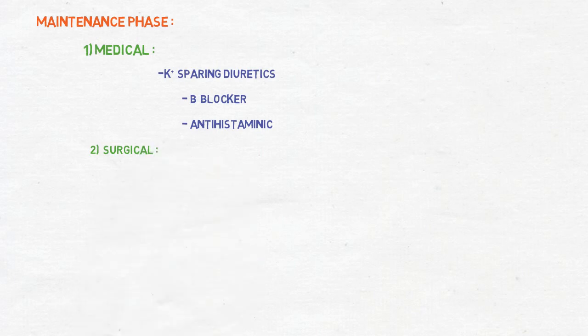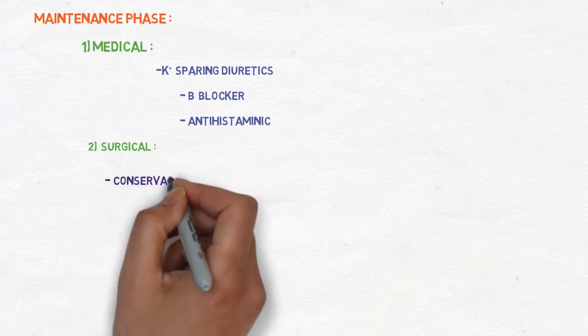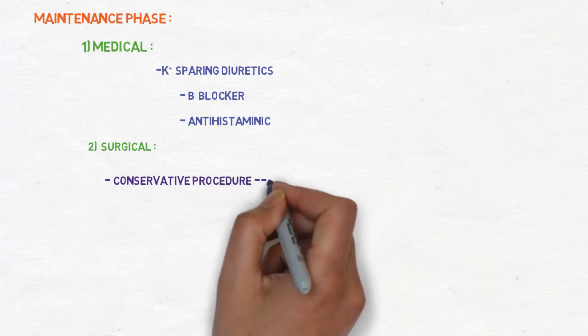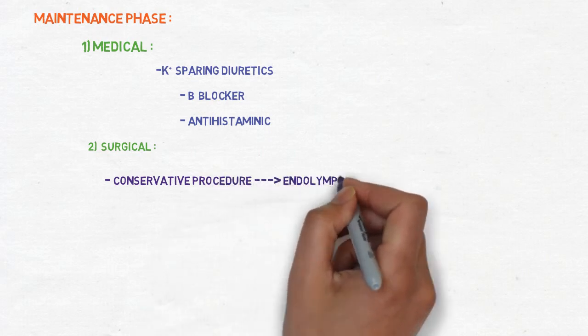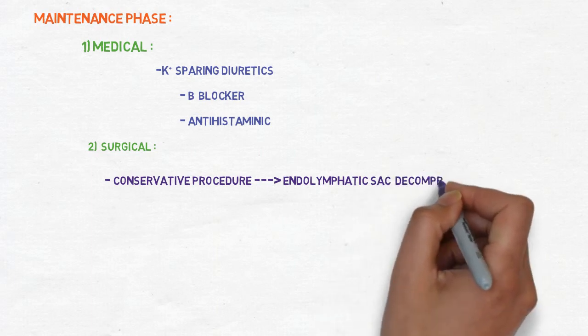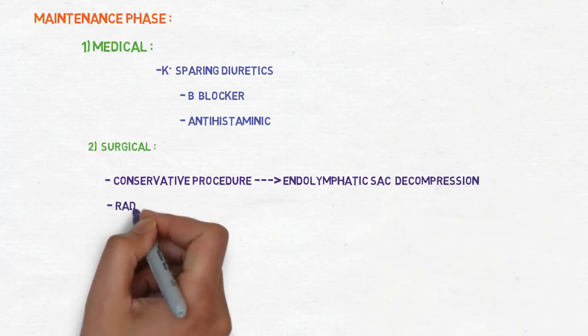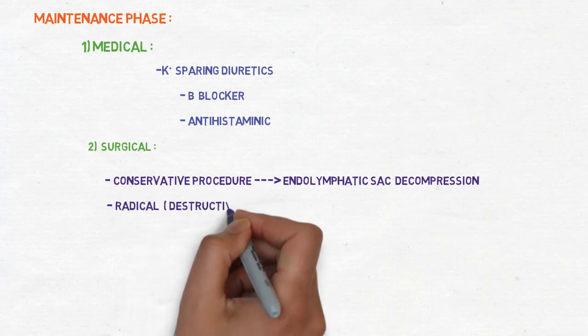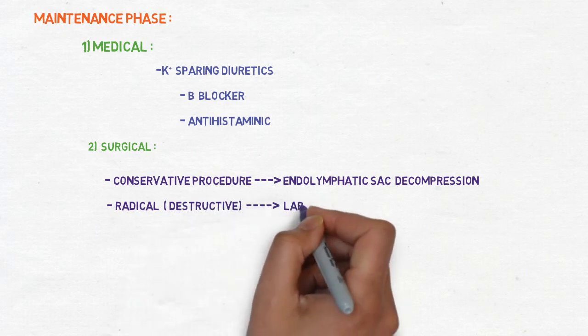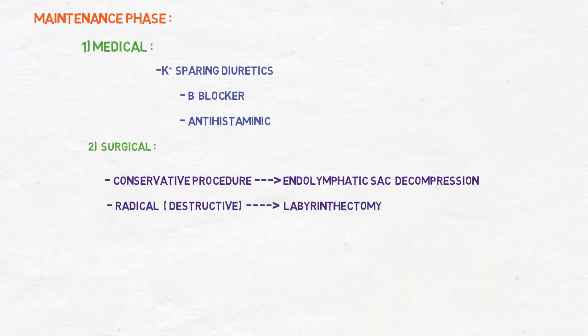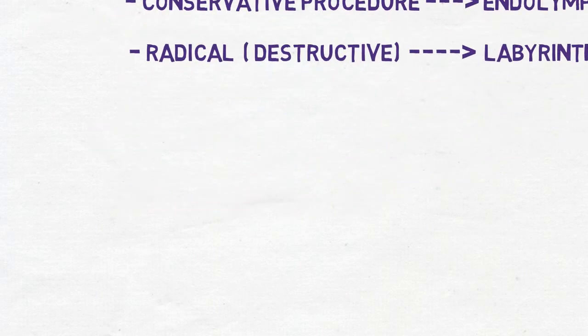Now move toward another one that is surgical method. There is first method that is conservative type in which we open the inner ear and do endolymphatic sac decompression. The other one is radical in which we surgically remove the labyrinth, that is surgical labyrinthectomy. So there is complete destruction of labyrinth. That's why there is no vertigo. No labyrinth, no vertigo. It's simple as that, there is no labyrinth then there is no vertigo.